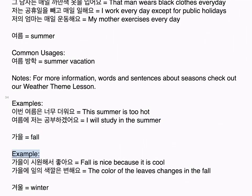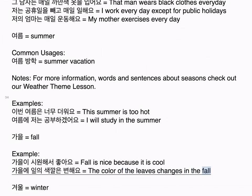가을 means fall and is cool. Examples: 가을이 시원해서 좋아요. Fall is nice because it is cool. 가을의 잎의 색깔은 변해요. The color of the leaves changes in the fall.